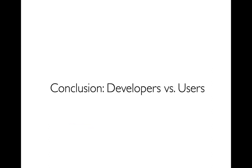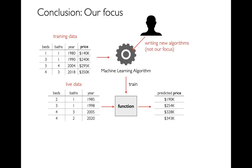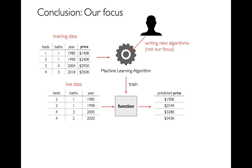To conclude this section, I want to talk about the difference between developers and users. There are people who develop new algorithms or write and optimize code for existing ones — we'll do a tiny bit of that, but that's not our focus. We aren't trying to do machine learning research or come up with novel ideas. Instead, we're going to be users of machine learning algorithms that come in Scikit-learn.